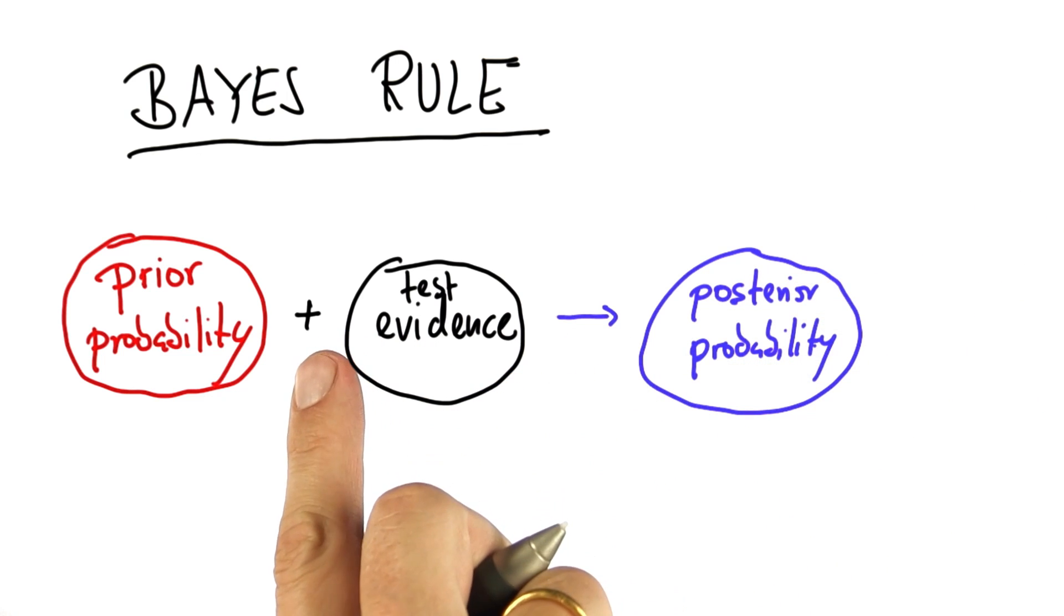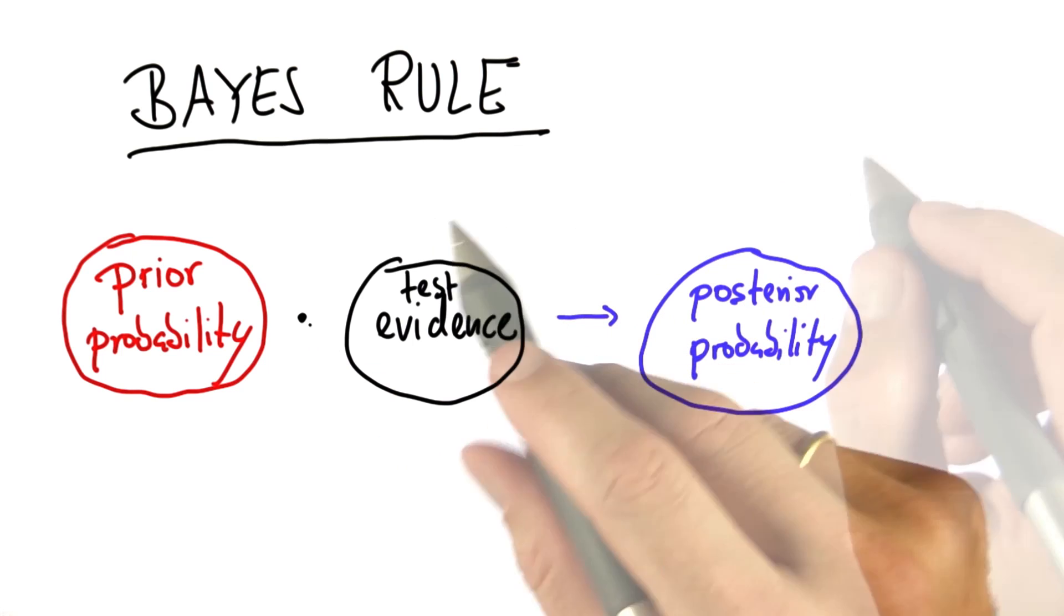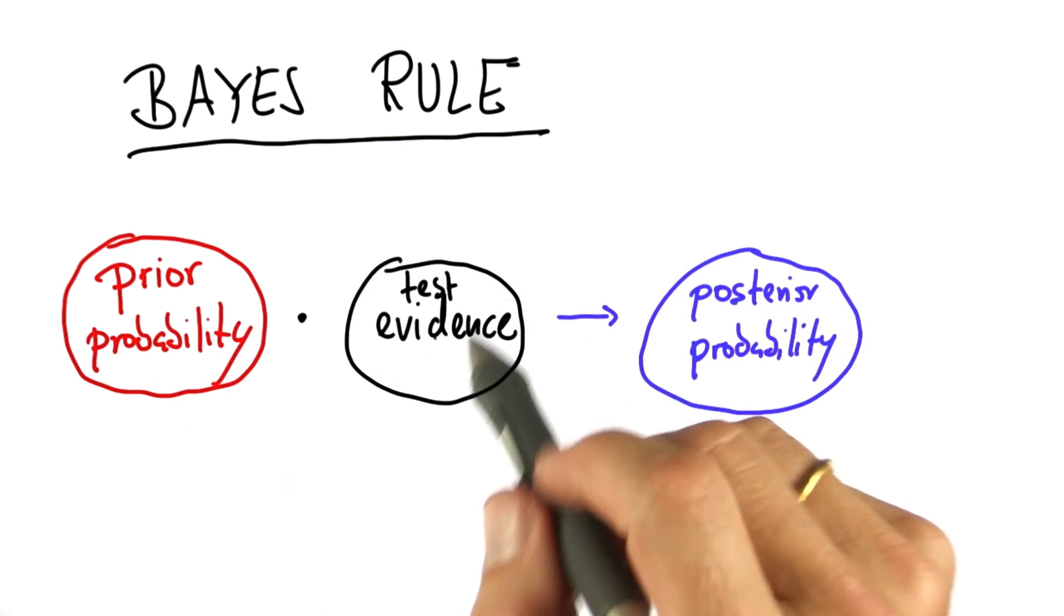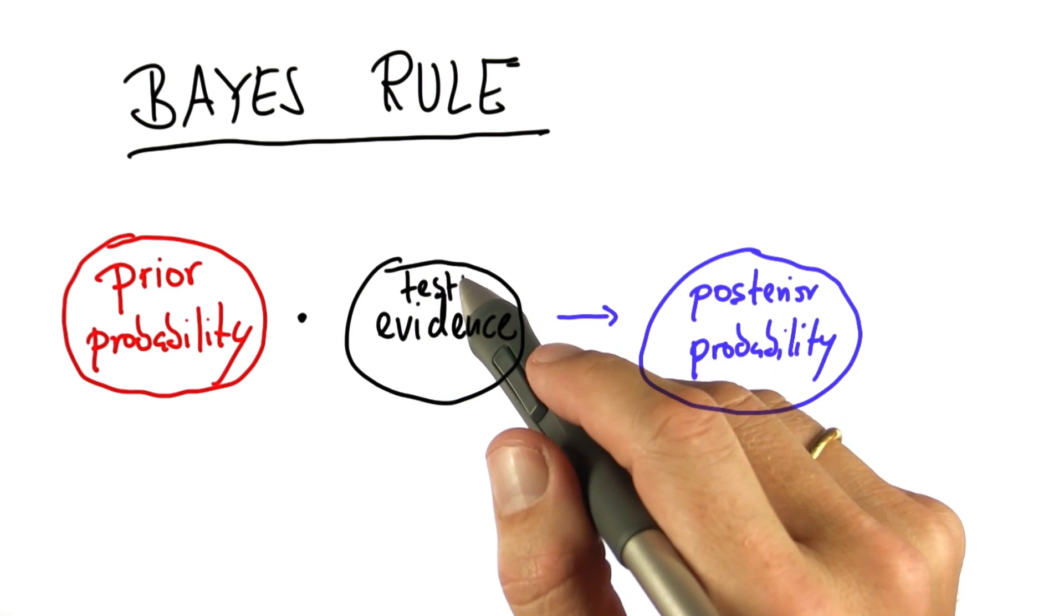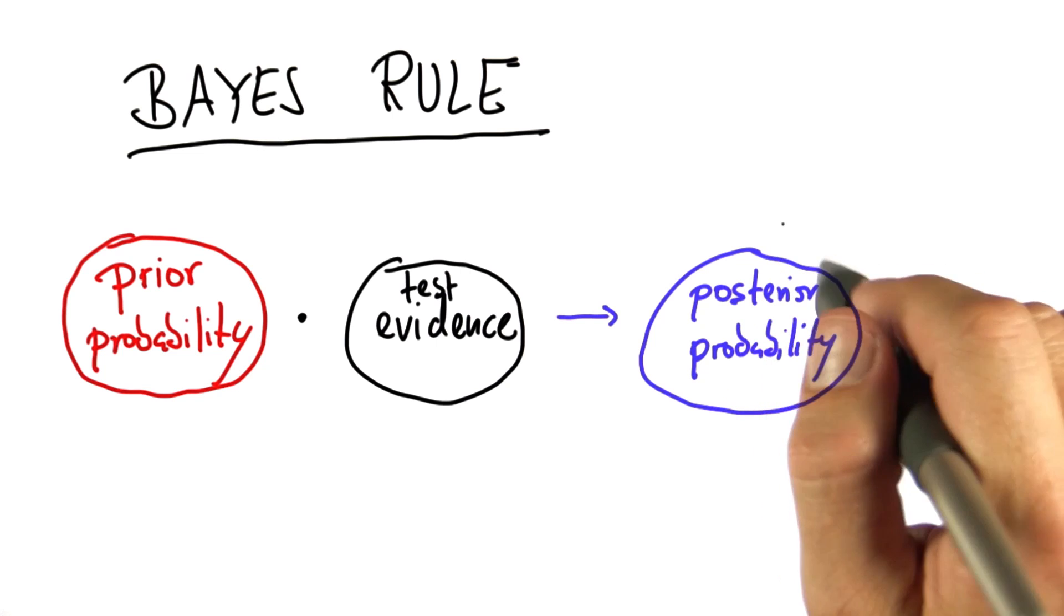Now this is not really a plus operation. In fact, in reality it's more like a multiplication. But semantically what Bayes' rule does is it incorporates some evidence from a test into your prior probability to arrive at a posterior probability.